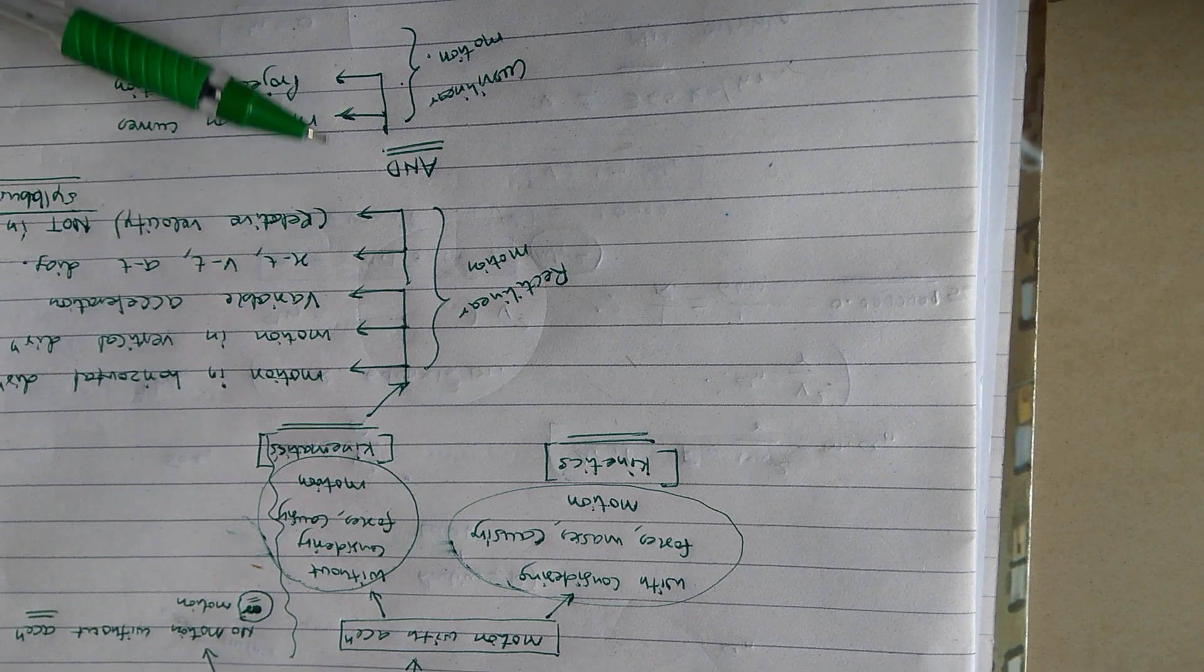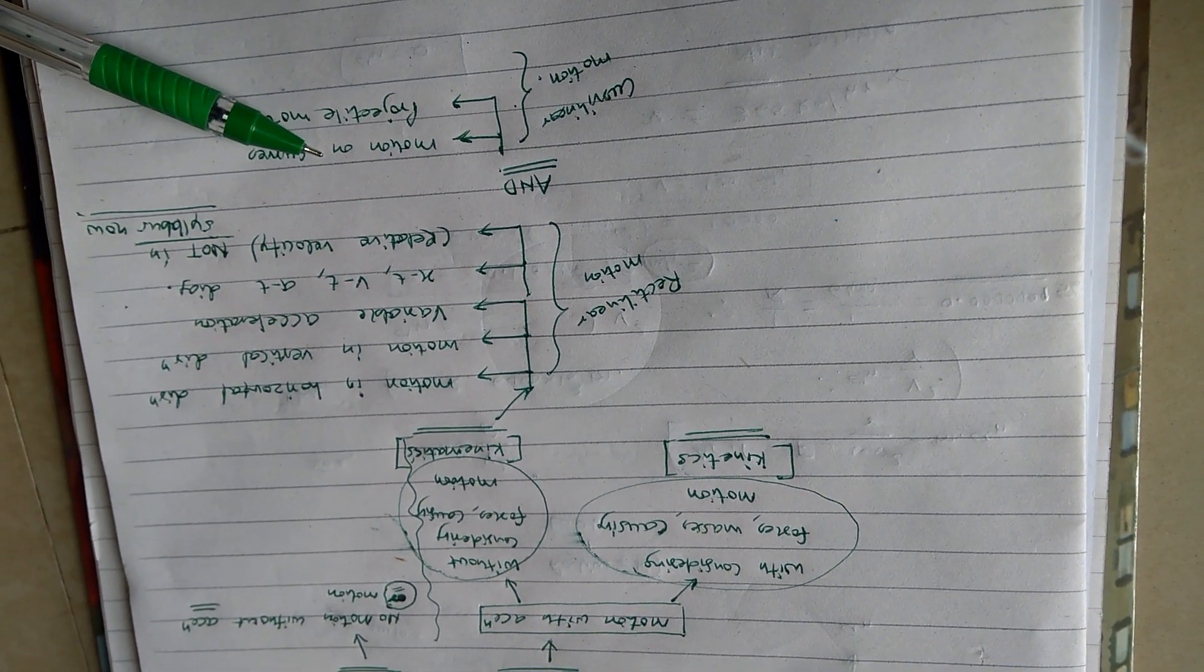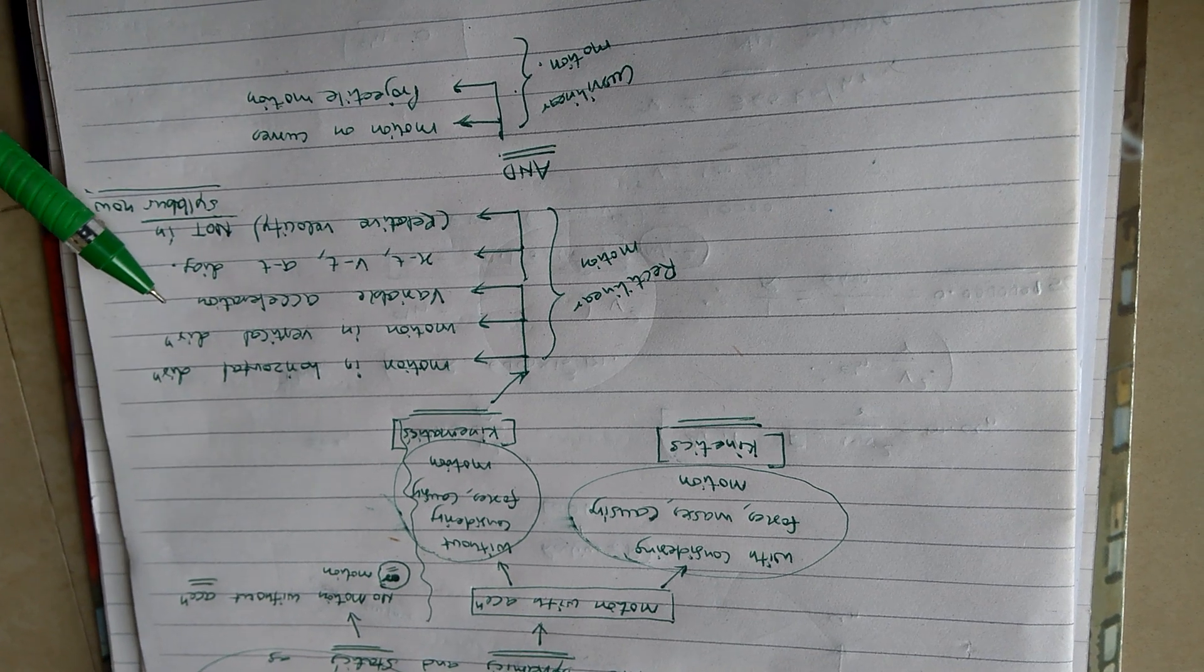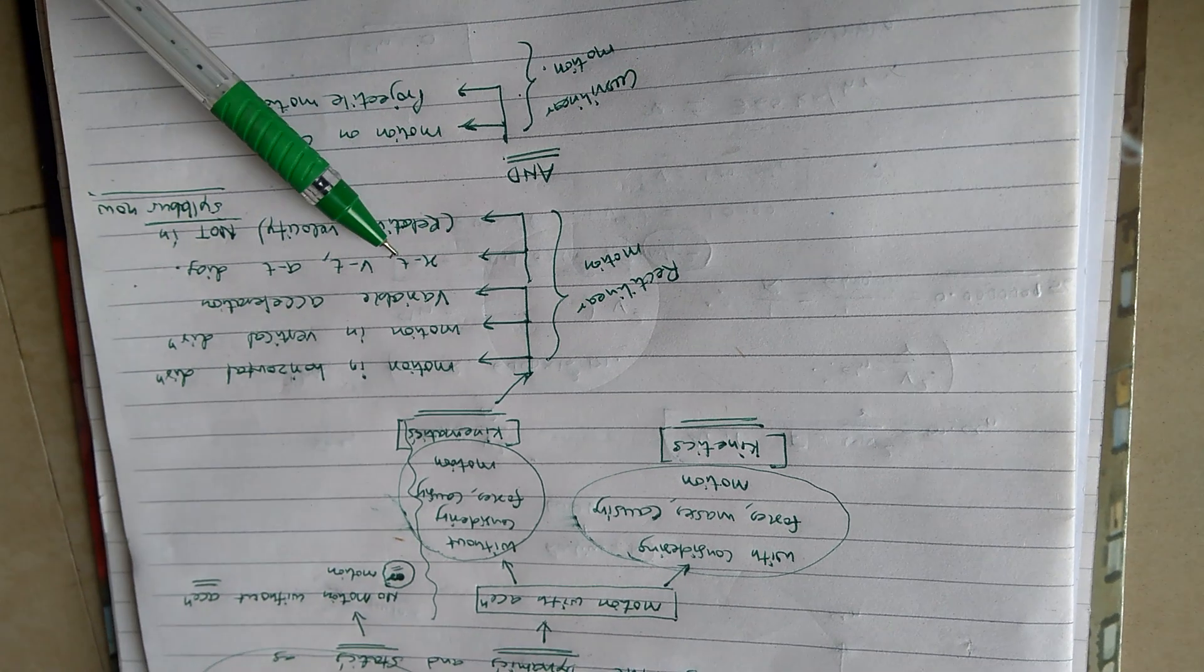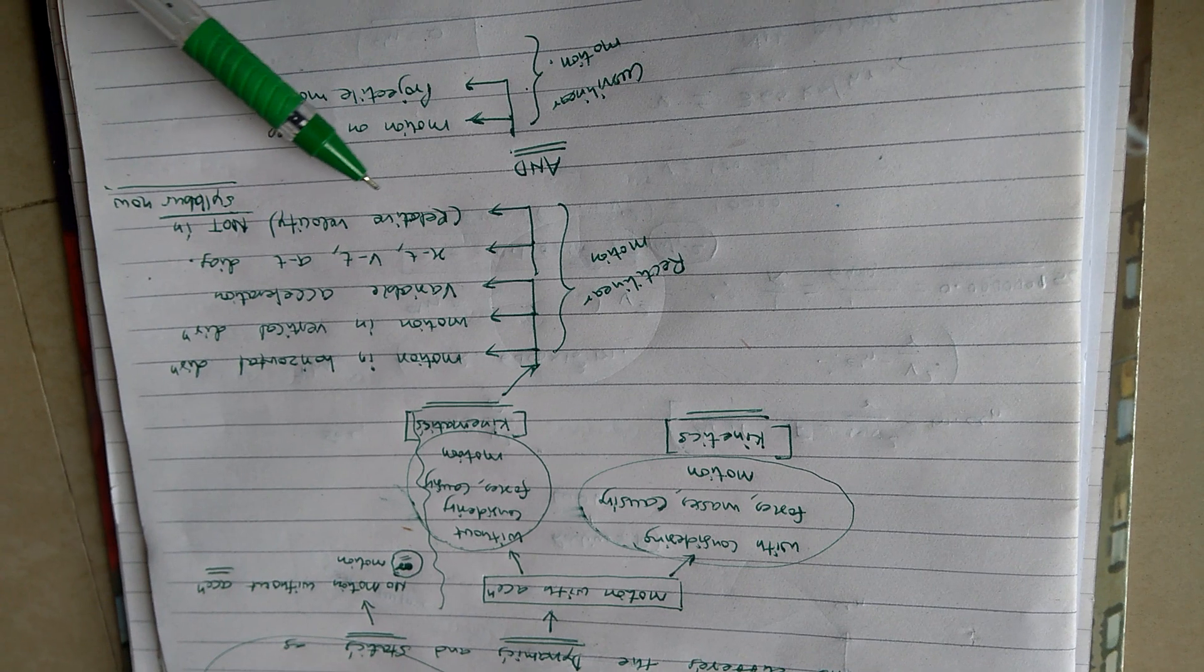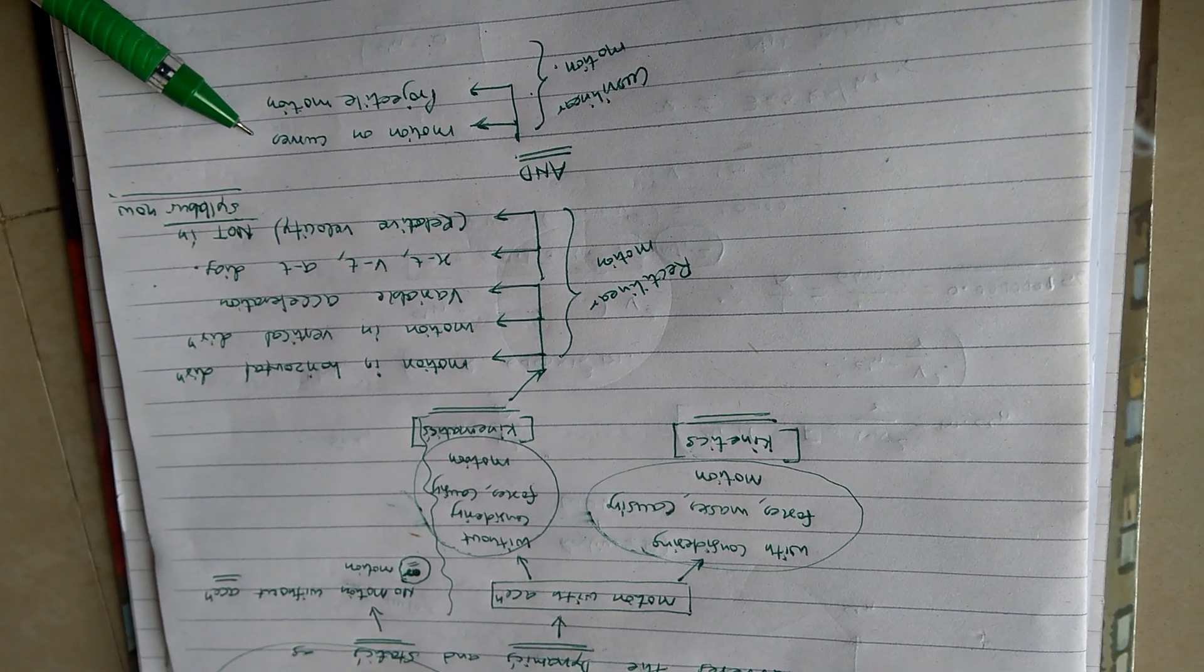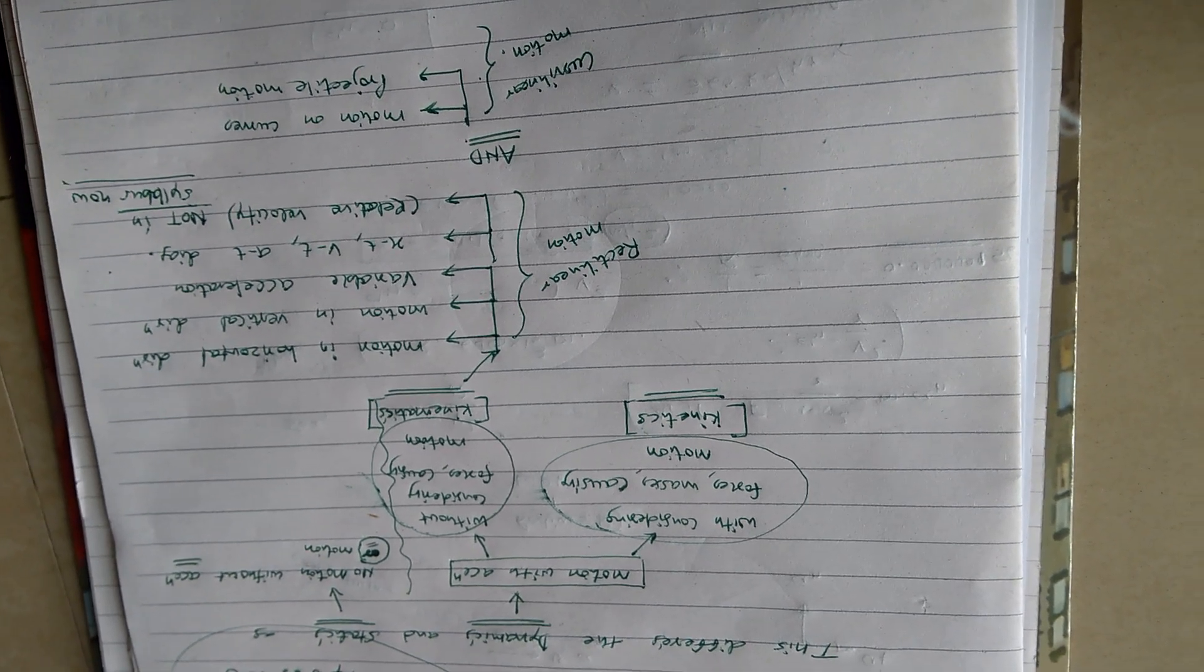Here again, kinematics can be defined in these parts. This is now your syllabus of unit number 5. Kinematics can be motion along horizontal direction, motion along vertical direction, variable acceleration, x-t, v-t, a-t diagrams - that is displacement versus time, velocity versus time, acceleration versus time diagram, and relative velocity which is not now in your syllabus. Whereas another part of this unit was motion on curves and projectile motion. So that we will see one by one.